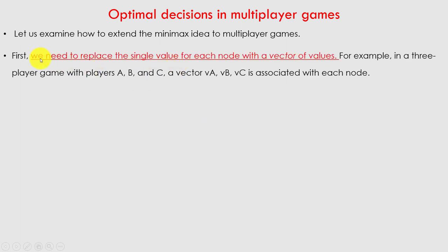For multiplayer games, we need to replace the single value for each node with a vector of values. If there are multiple players, for each player there should be one particular vector. So in a three-player game with players A, B, and C, vectors VA, VB, and VC are associated with each node.